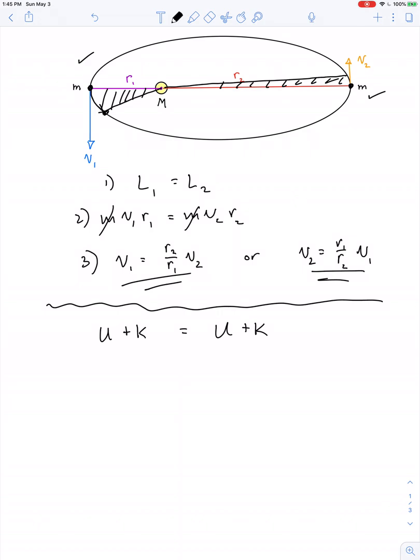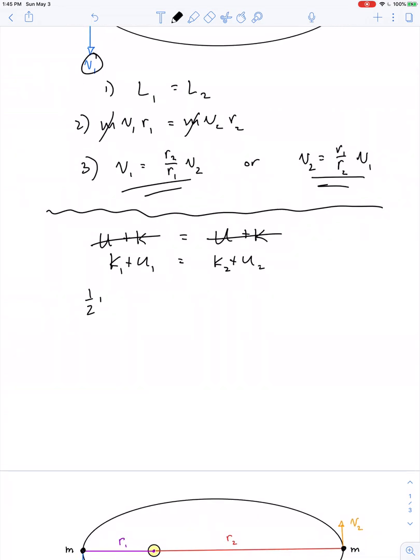At perihelion, when the planet is close to the sun, it has less potential energy, but more kinetic energy, and vice versa. K plus U, kinetic energy at point 1 plus potential energy at point 1 is equal to kinetic energy and potential energy summed up at point number 2. 1 half M V1 squared minus GMM over R1 equals 1 half M V2 squared minus GMM over R2.